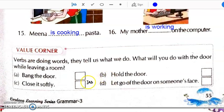Now, here the value corner is there. Verbs are doing words. They tell us what we do. Verbs yaani ki doing words aise hain ki jo hume batate hain ki hum kya kar rahe hain. What will you do with the door while leaving the room? Agar aap kamere se bahar ja rahe hain, toh aap darwaze ke saath kya karoge? Bang the door. Jor se usko band karoge.